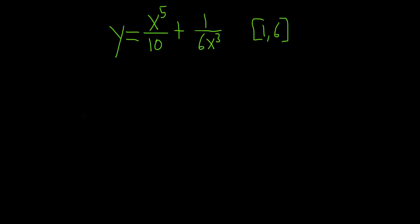In this problem, we're going to find the arc length of the graph of this function from 1 to 6. The formula for the arc length is: lowercase s equals the definite integral from a to b of the square root of 1 plus the derivative squared, dx.